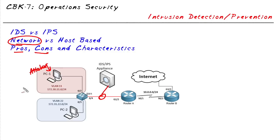There's also host-based intrusion prevention and detection, which involves running software on computers and servers — reading application logs, security logs, and the registry on Windows machines, looking for malicious behavior locally. The benefit of host-based IPS is it will see local activity. However, it runs as an application, so there's a performance overhead on that device. And if we want to protect 10,000 computers, we need to buy licenses and install software on all 10,000 — making the cost and overhead greater than a network-based solution.